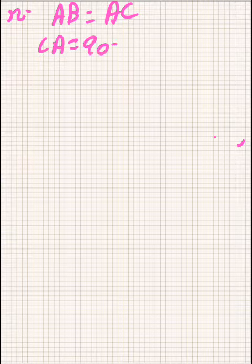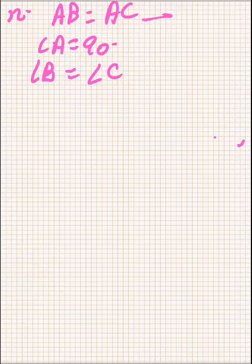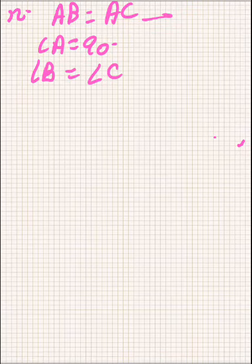We are given that AB is equal to AC and angle A is equal to 90 degrees because it is an isosceles right-angled triangle. Due to this property, angle B will be equal to angle C because angles opposite to equal sides are equal.